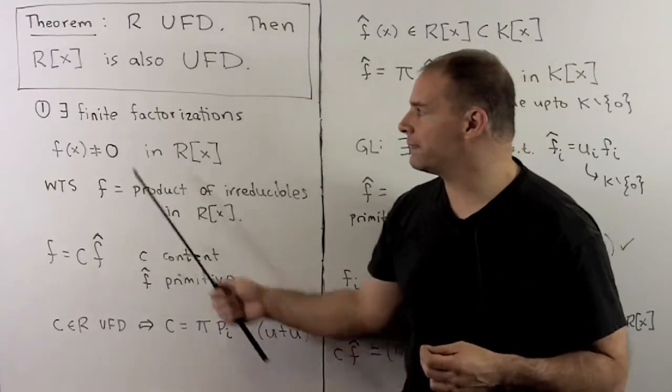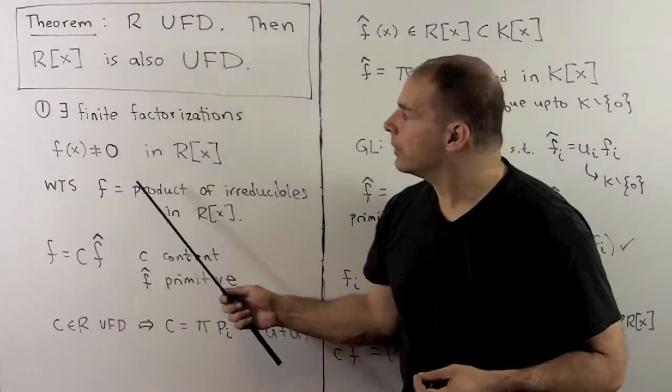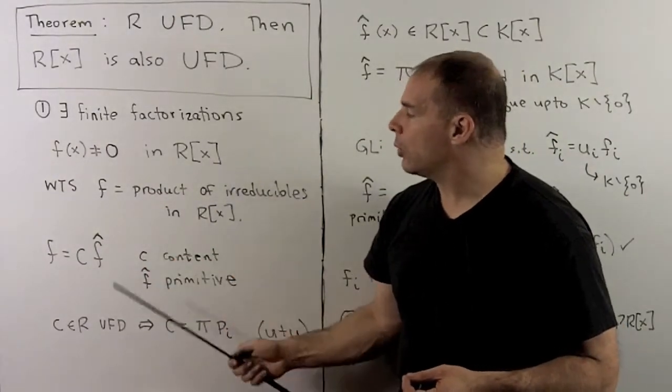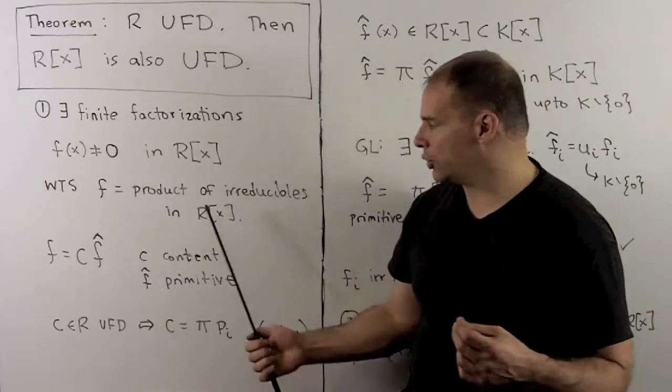Then we'll want to show that these finite factorizations are unique up to a unit. Now, for 1, we start with a non-zero f(x) in R adjoin x.